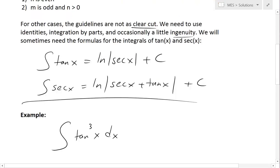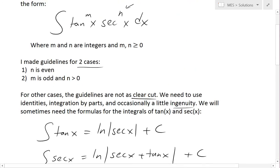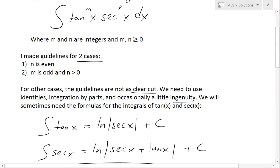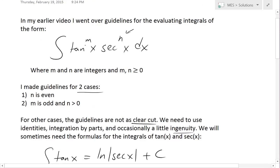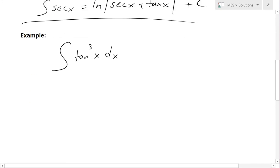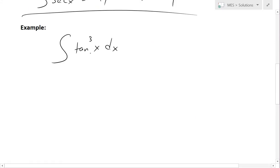n is actually zero and m is odd, so n equals zero in this case. To deal with this one, we could try to separate a tan x out.